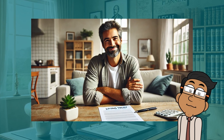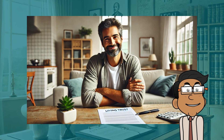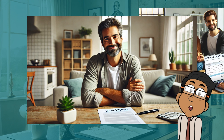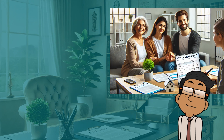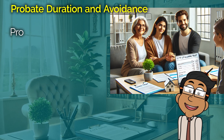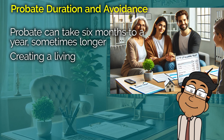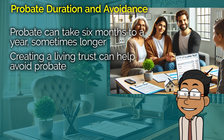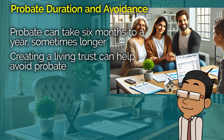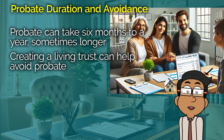Being an executor comes with a lot of responsibilities and can be quite time-consuming. It's important for anyone appointed as an executor to understand what they're getting into and possibly seek legal or professional advice to help manage the process. The length of the probate process can vary widely depending on the complexity of the estate and whether any disputes arise. On average, probate can take anywhere from six months to a year, but it can take longer if there are complications. It's not uncommon for larger or more complex estates to be tied up in probate for several years.